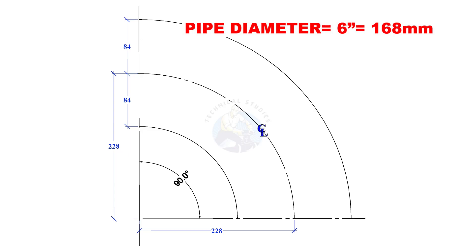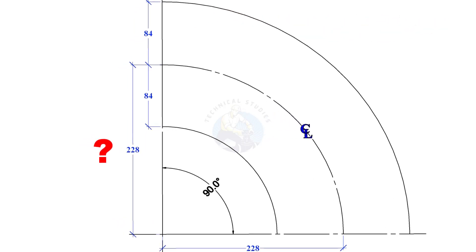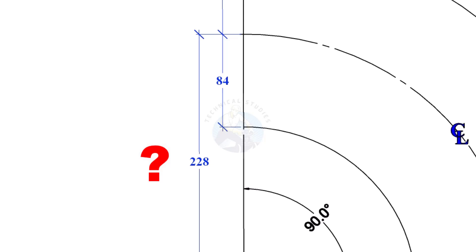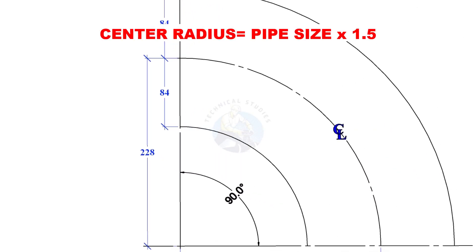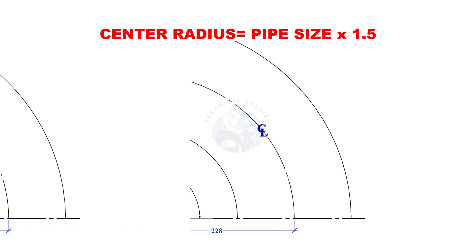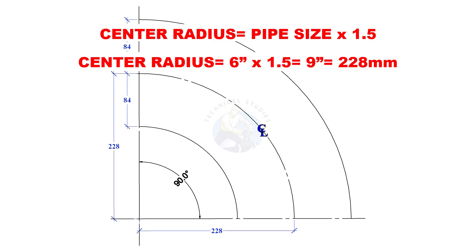This is a long radius mitre bend. How to calculate the centre radius of a long radius elbow. Multiply the pipe size by 1.5. 1.5 is a constant. Here the answer is 228mm.